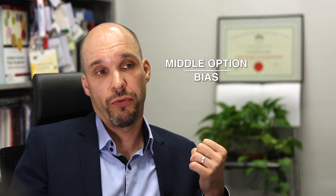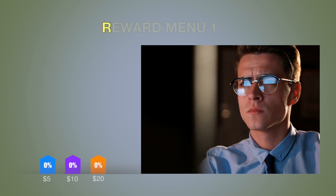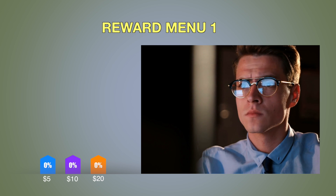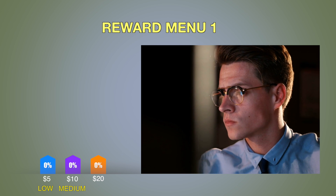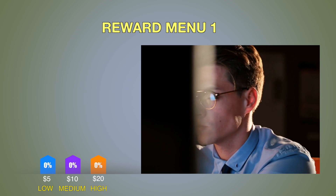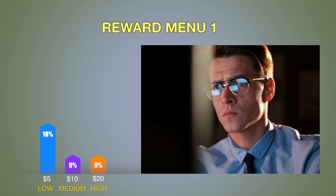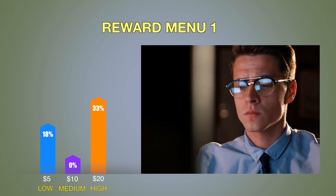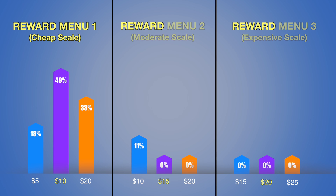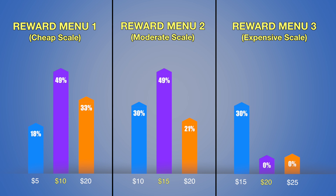The middle option bias refers to people's tendency to choose the middle option of several sequentially ordered options. So if you have different options at a low, medium, and high price point, people tend to neither choose the cheapest nor the most expensive options, but tend to go for the middle option. Interestingly, we observed that effect to persist even when we shifted the scales — even as the different price points became more expensive, people still tended to select the middle option.